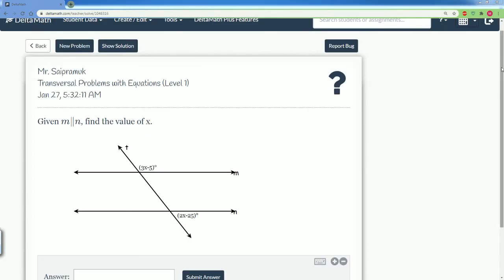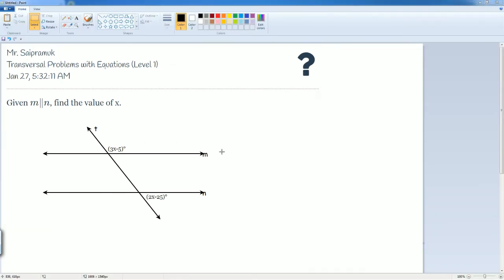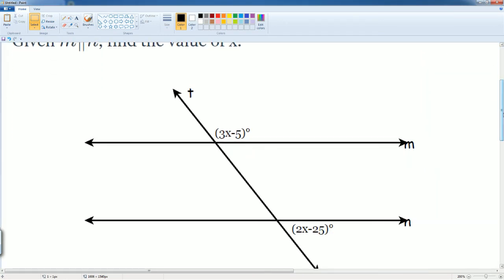Here it says given m is parallel to n, you're gonna find the value of x. To solve for x we have to set up an equation. To set up the equation we have to see how the angles are related.